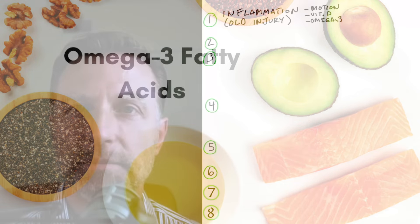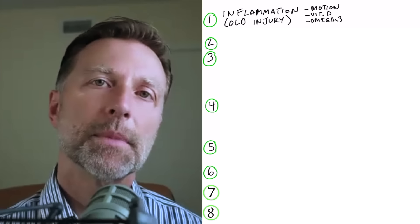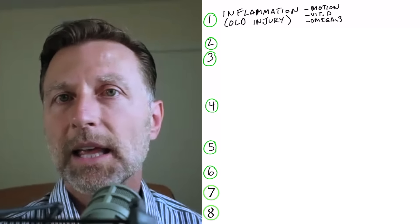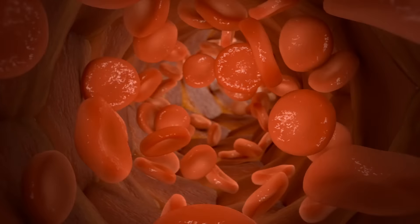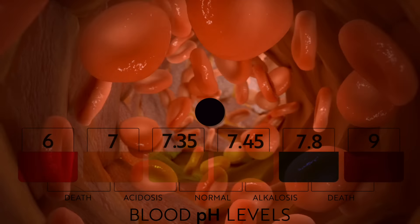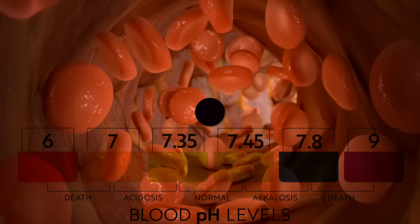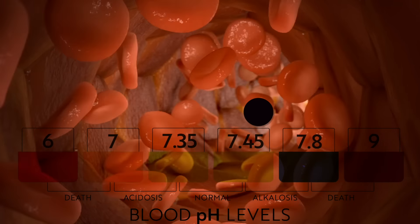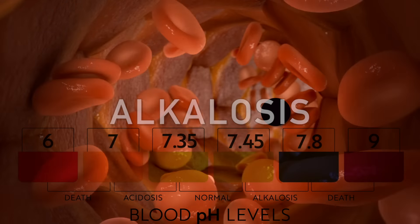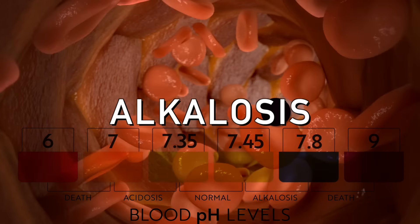Now, the next factor that relates to calcium building up on your tissues is the pH. So normally your blood should be slightly alkaline. If the pH goes too high and becomes too alkaline, then you're going to have what's called alkalosis. And that's what I want to touch on.